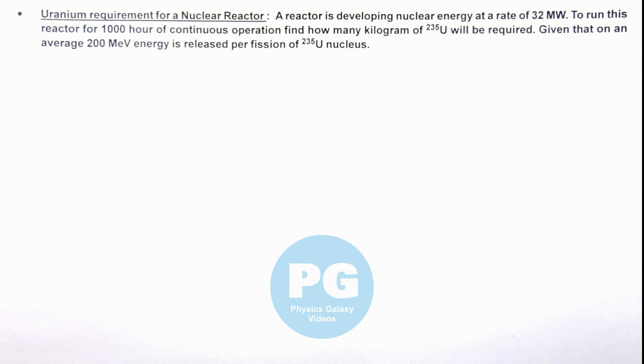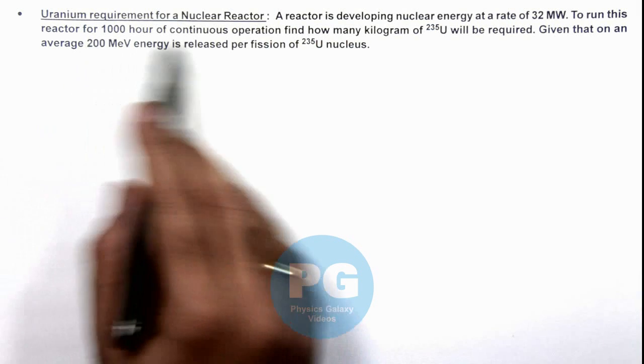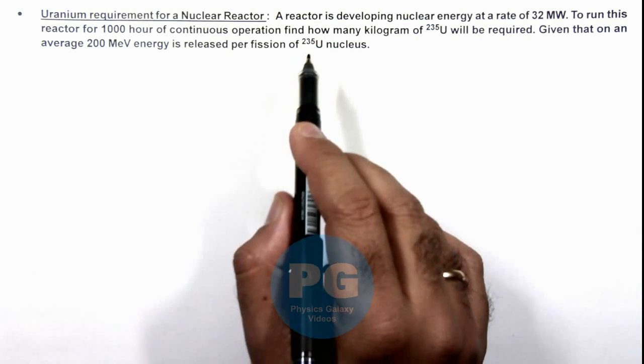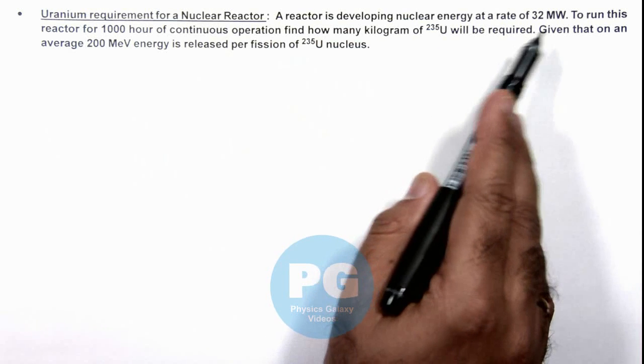In this illustration we'll be analyzing the uranium requirement for a nuclear reactor. We are given that a reactor is developing nuclear energy at a rate of 32 megawatts.